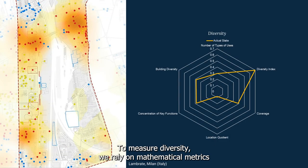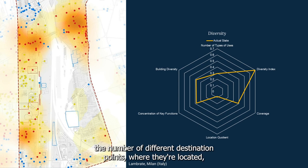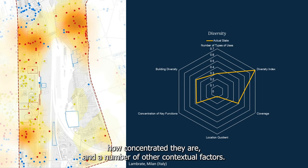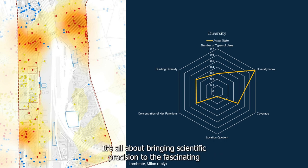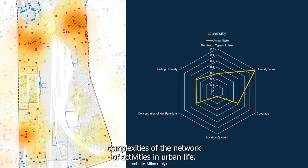To measure diversity, we rely on mathematical metrics that take into account the number of different destination points, where they're located, how concentrated they are, and a number of other contextual factors. It's all about bringing scientific precision to the fascinating complexities of the network of activities in urban life.